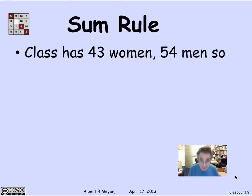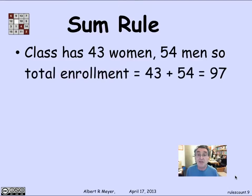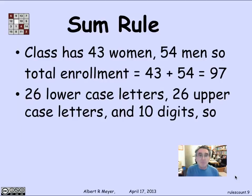But let's do an example. Suppose a class has 43 women and 54 men. How many people are in it? 43 plus 54 equals 97. This is implicitly assuming that there's no one whose sex is ambiguous and that there's no third sex, so that men and women are disjoint. The total number of students is the sum of the number of men and women.